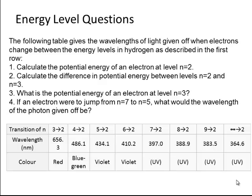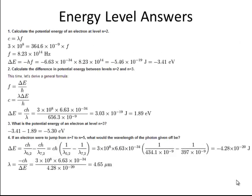Let's look at some answers now. We'll show you all the answers and work through these. First of all, calculate the potential energy of an electron at level n equals 2. We know the speed of light and we know the wavelength. And we know that it being light means that we can work out the frequency. So the frequency becomes 8.23 times 10 to the 14 hertz. Now the change in energy is going to be equal to the frequency times Planck's constant. So therefore, we can work out this is going to be 5.46 times 10 to the minus 19 joules, or more importantly, minus 3.41 electron volts.